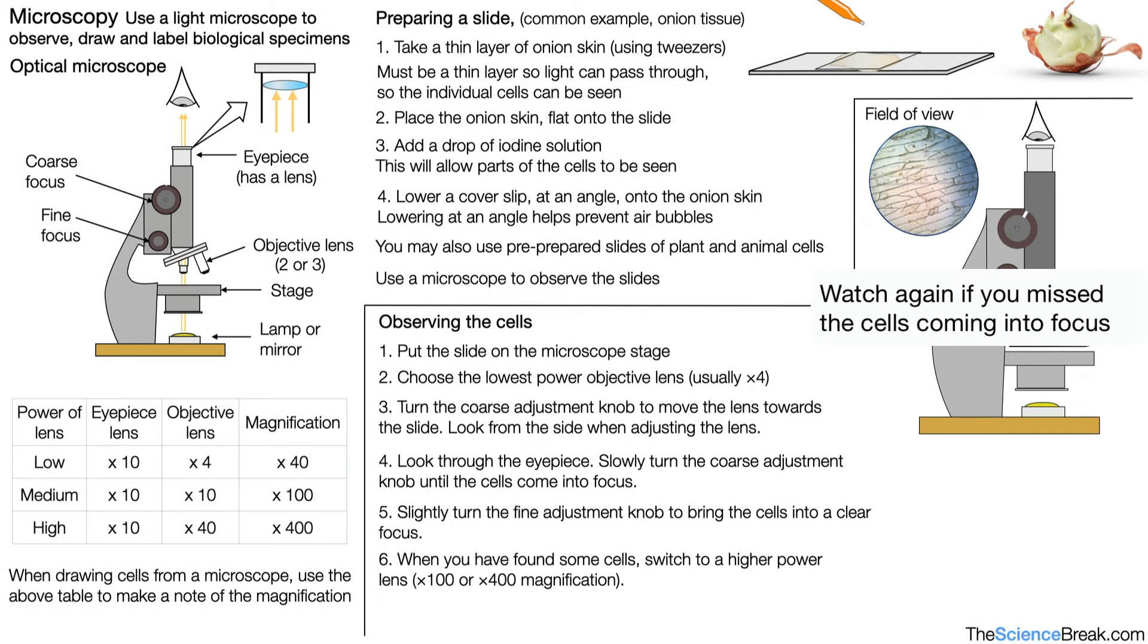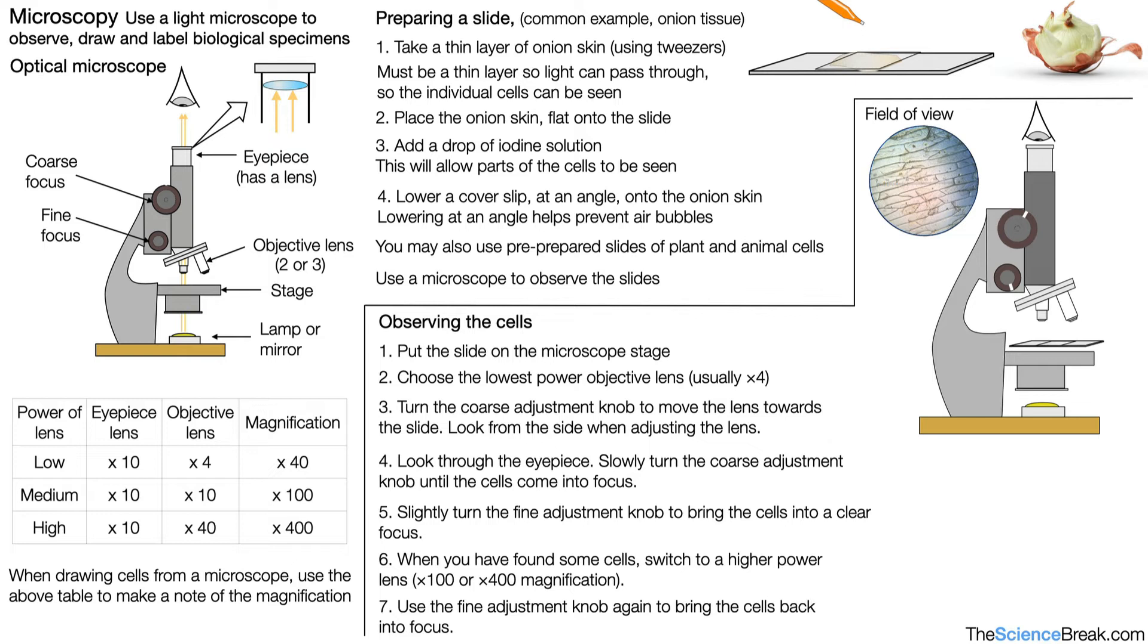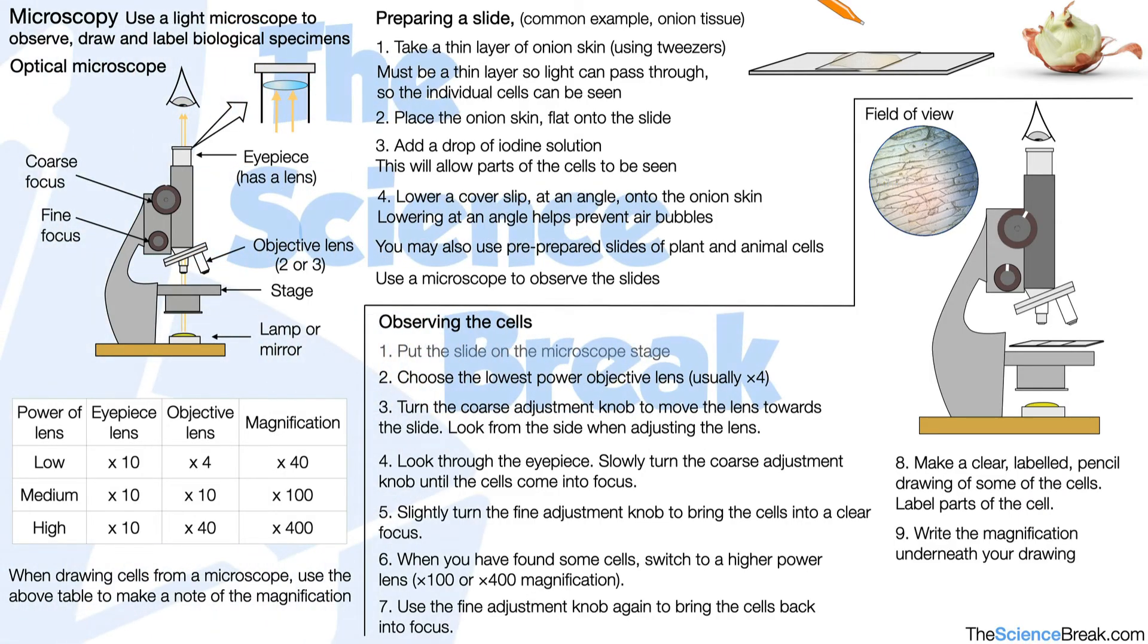When we have found some cells, we would switch to a higher power lens, either the x100 or x400 magnification. And then we would use the fine adjustment knob again to bring the cells back into focus. Then we would make a clear labeled pencil drawing of some of the cells. We would then label the parts of the cell. When we do that, we would make sure we write the magnification underneath the drawing.